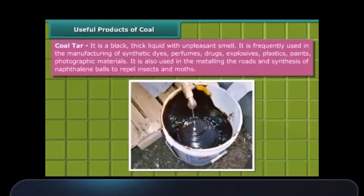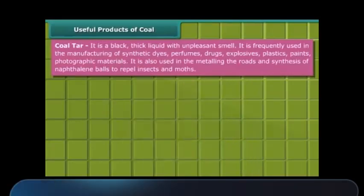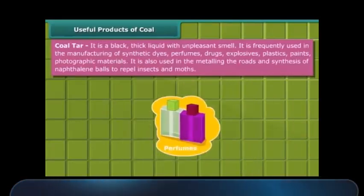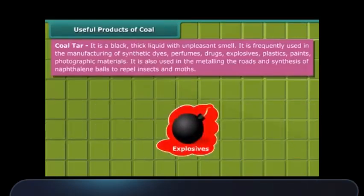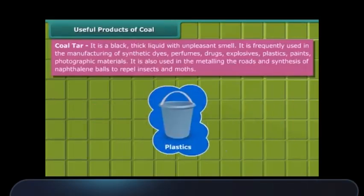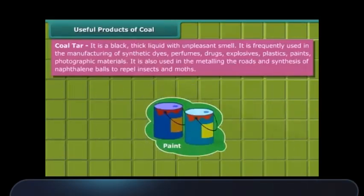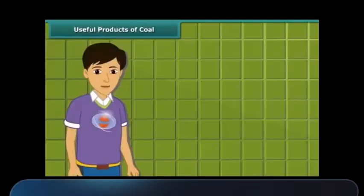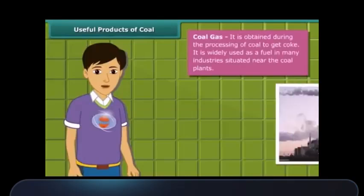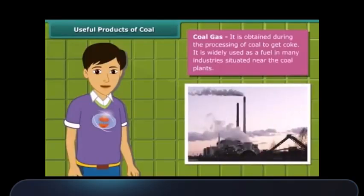Coal tar is a black, thick liquid with an unpleasant smell. It is frequently used for the manufacturing of synthetic dyes, perfumes, drugs, explosives, paints, plastics, and photographic materials. Coal gas is produced when obtaining coke from coal, and in many industries located near coal plants, it is used as a fuel.